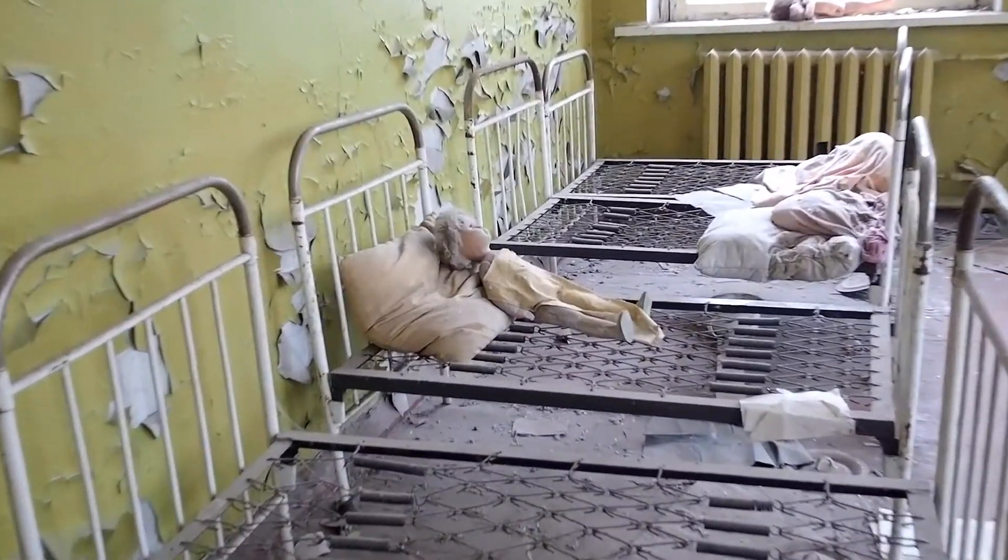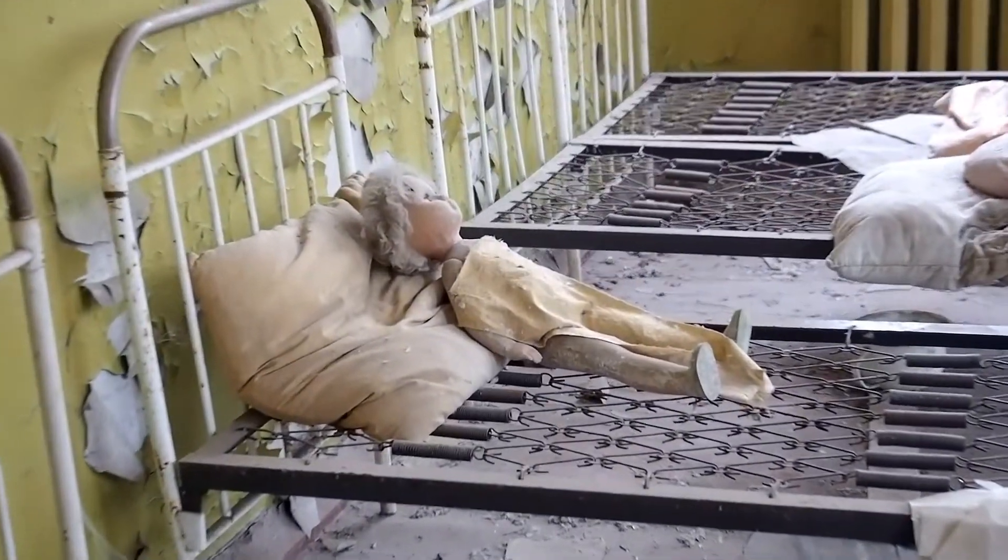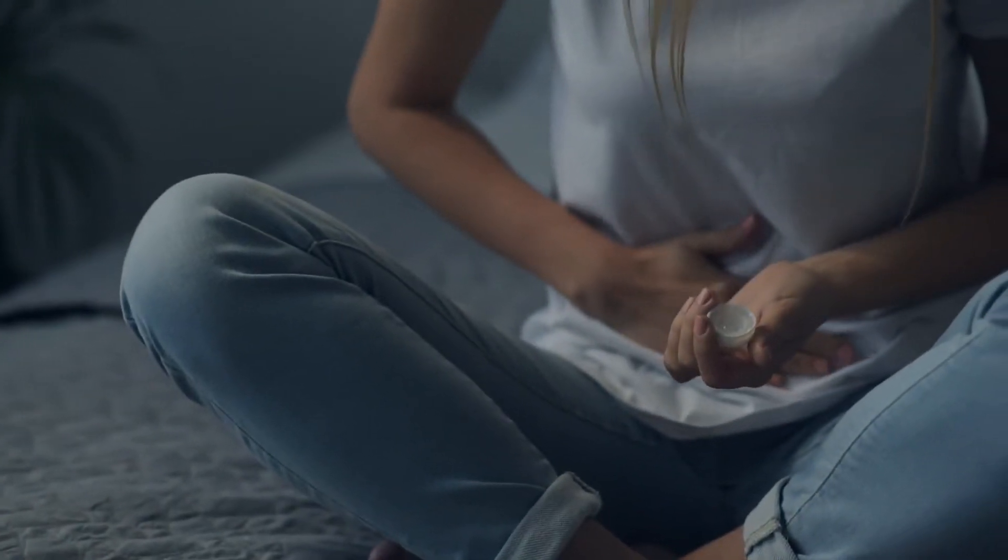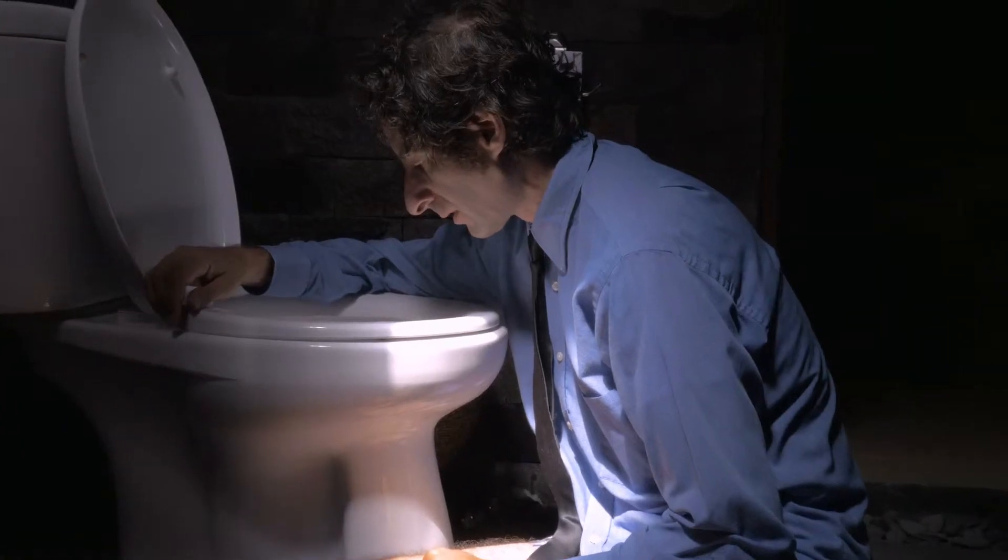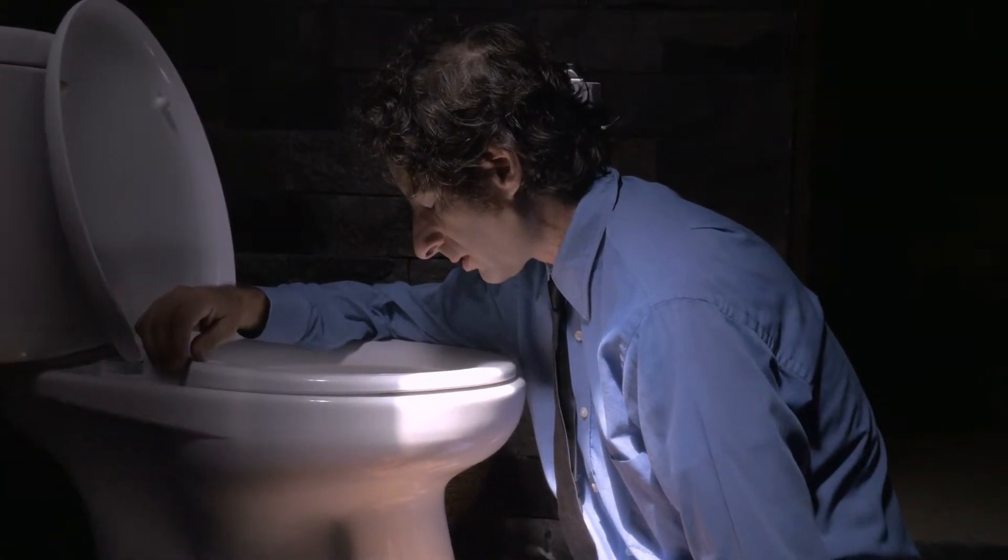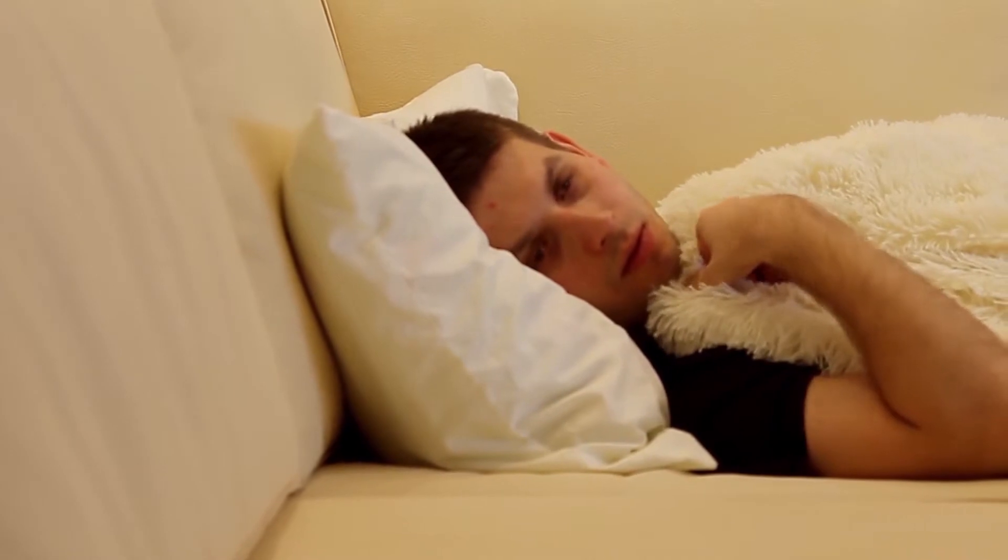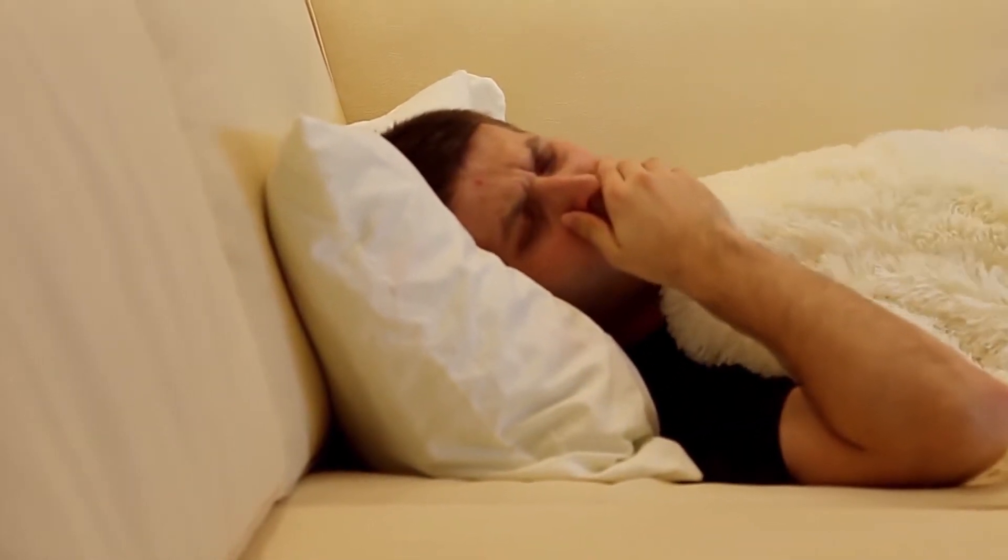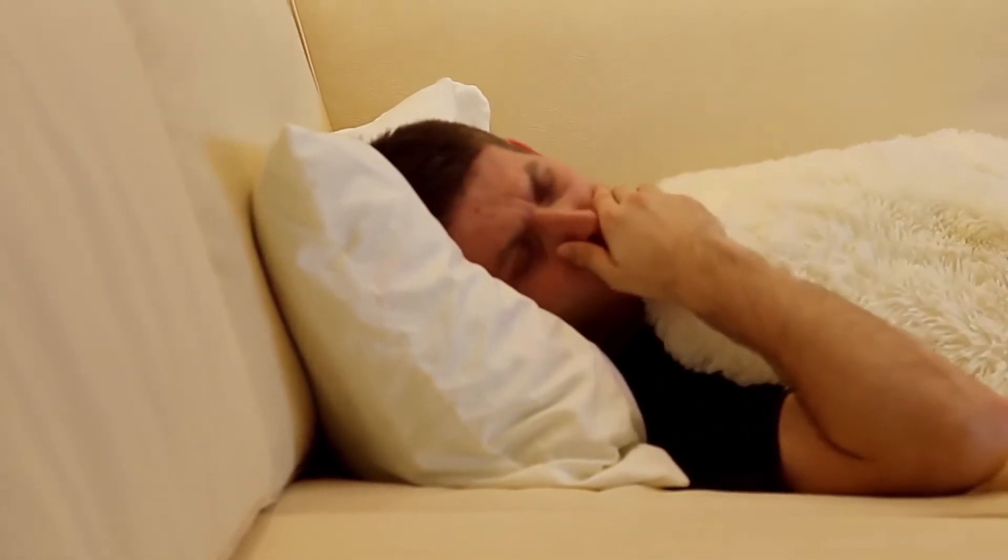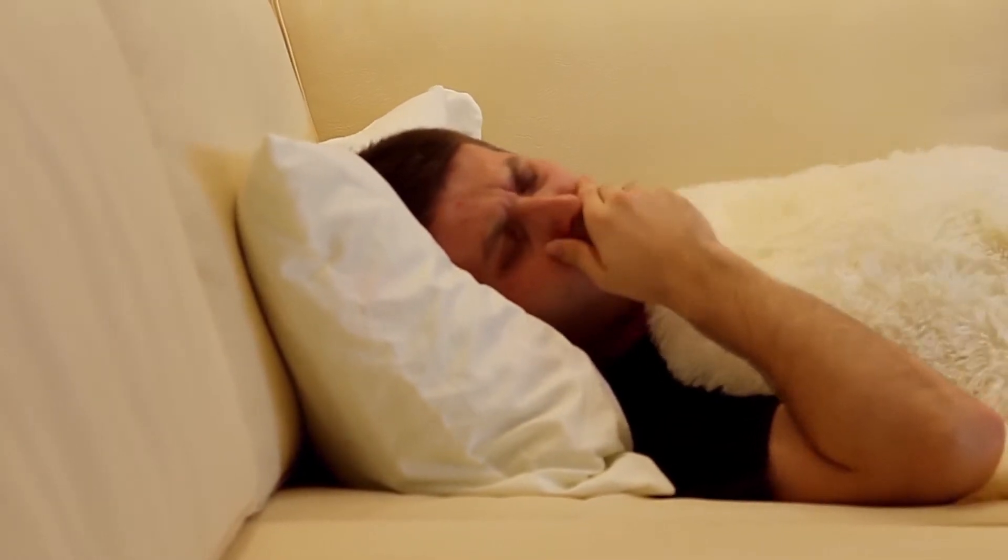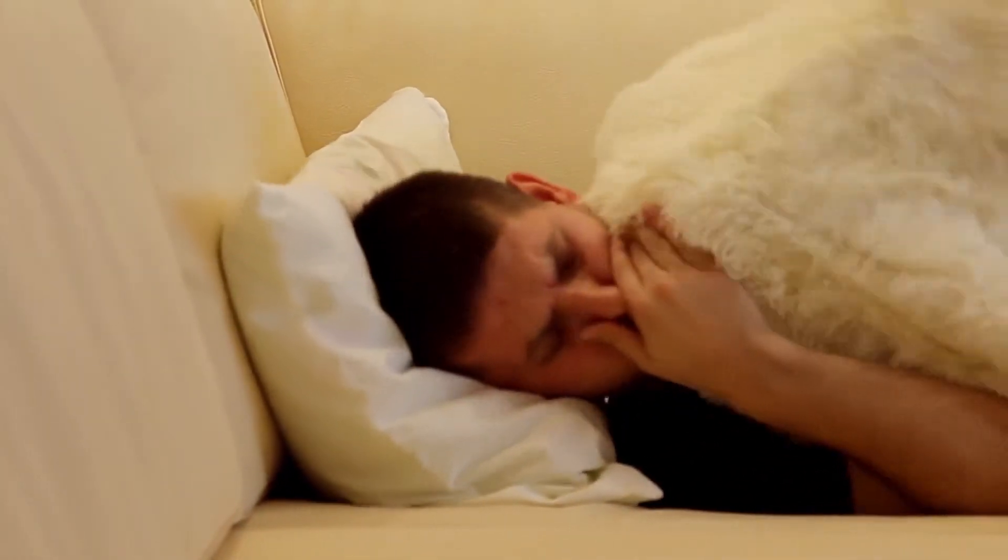Exposure to high levels of radiation can therefore cause poisoning with a range of symptoms. Nausea and vomiting often begin within hours of exposure, followed by diarrhea, headache, and fever. After the first cycle of symptoms, there may be a short period without apparent illness, but it may be followed by new, more severe symptoms a few weeks later.